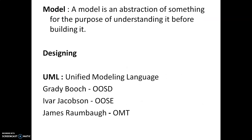Then what do we mean by a model? A model is an abstraction of something for the purpose of understanding it before building it. For example, when you want to construct a house you don't directly start — you lay out a blueprint, that is where you model it. Depending on the changes required, first you go ahead with the design and then you start implementing, which is actually constructing the real house.